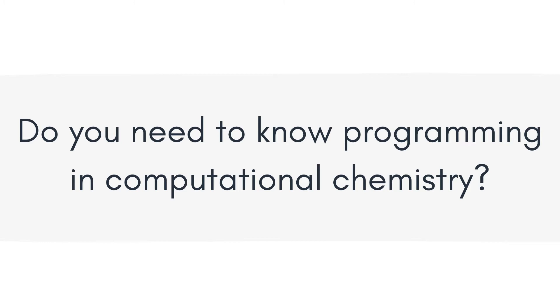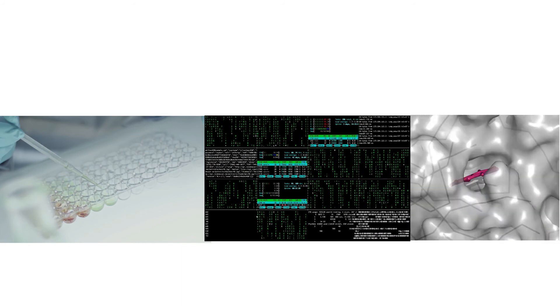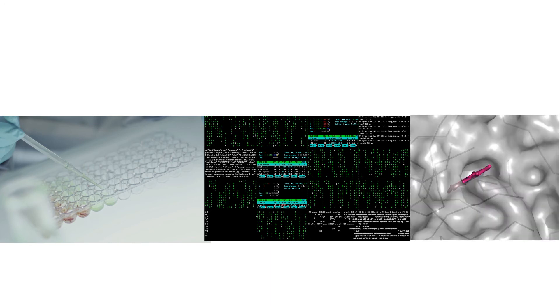First of all, let's answer the question: why would you actually need programming skills in order to study computational chemistry? Computational chemistry is a special branch of chemistry that uses laws of physics to understand molecular-level behavior. Although the roots of chemistry are experimental in nature, with the advancement of computational power we could make significant advancements in science, and computational chemistry methods helped us make calculations with the help of computers that would have been inconceivable even 50 years ago.